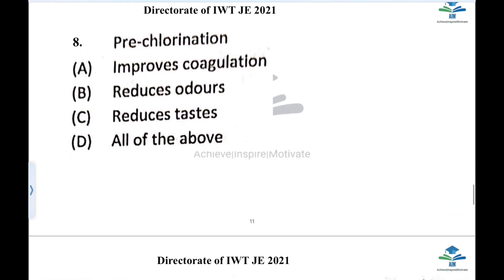The next question is about pre-chlorination. What is pre-chlorination? It is chlorination added before the filtration step — before sedimentation, filtration, and coagulation. The purpose of pre-chlorination is to improve coagulation and reduce odor. The correct answer is: pre-chlorination is done to improve coagulation and reduce odor.